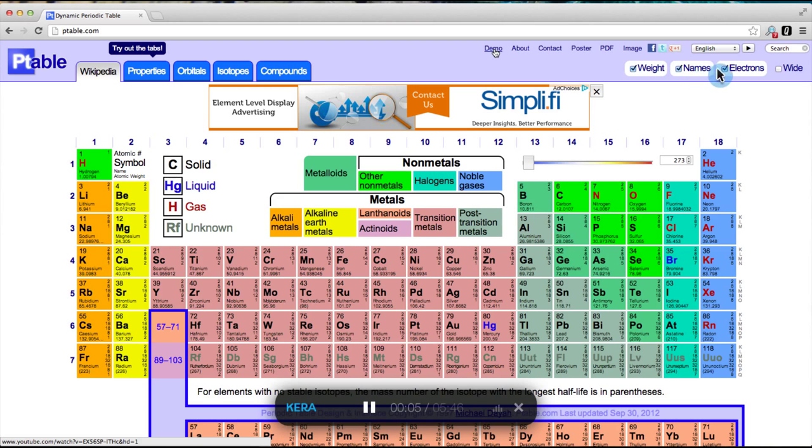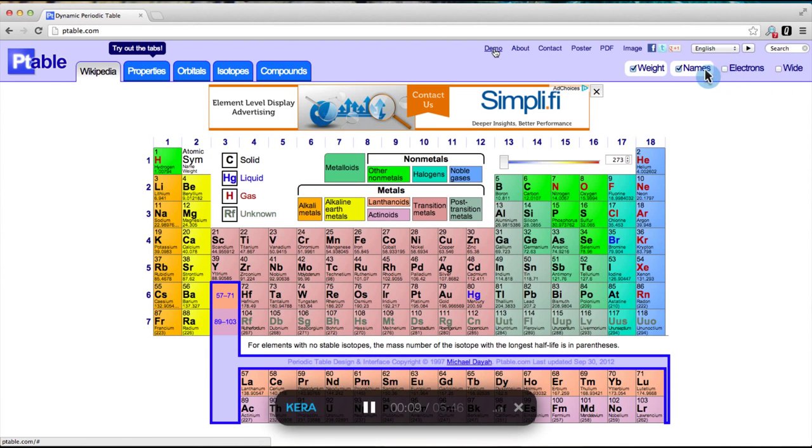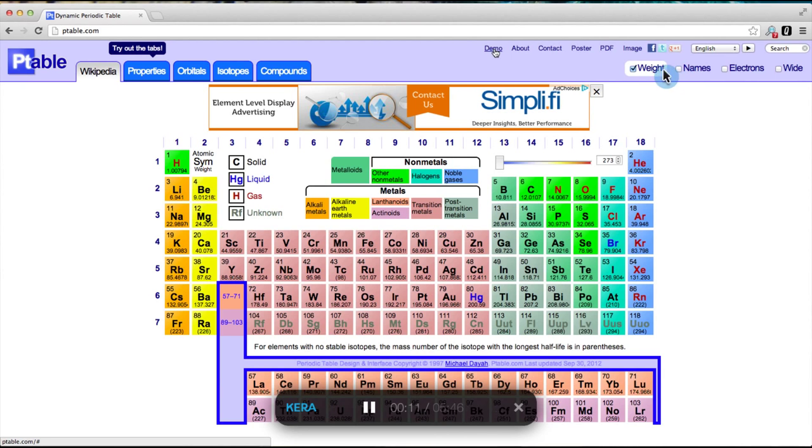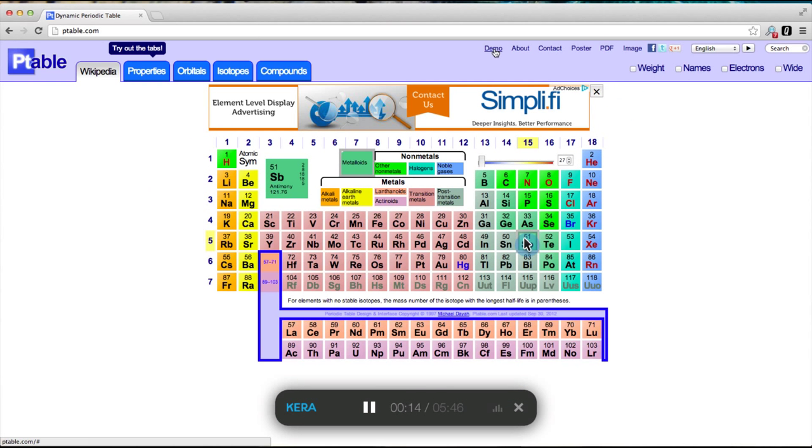The controls at the top right change the amount of data shown for each element, hide the electron shell configurations, or also the element names, and even atomic weights. In the more compact views, we can still see the name and electron configuration in the close-up if we hover over an element.